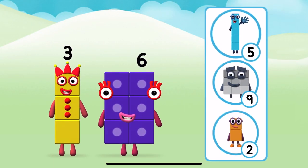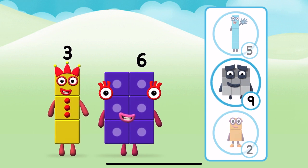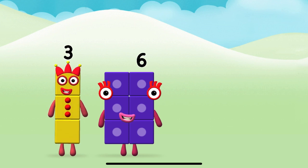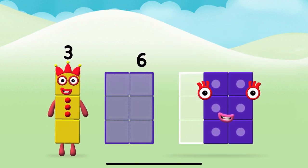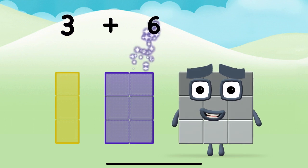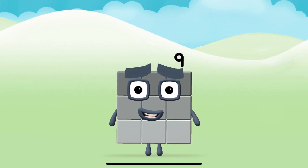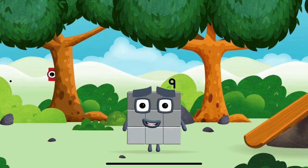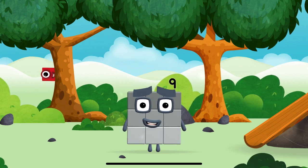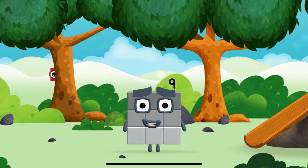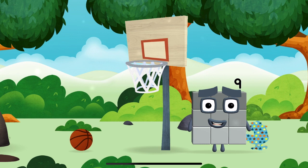Do you know which number block you'll make when you add these two number blocks together? Correct, you chose the right answer! Can you add the number blocks together? Three plus six equals nine! Congratulations, you made number block nine! You made a new number block! False alarm! I am nine and I feel fine!